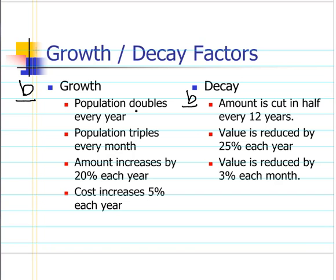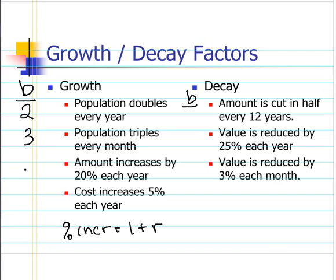If the factor words are given as 'doubles,' then b is going to be 2, because you would be multiplying by 2 every time. 'Triples' is going to be 3. When it's a percent increase, we use the formula 1 plus r, where r is the percent in decimal. So for 20%, that's 0.2, giving b = 1.2. For 5%, that's 0.05, so b = 1.05.